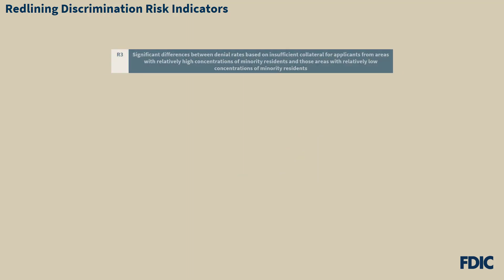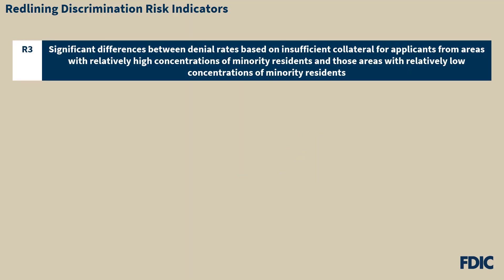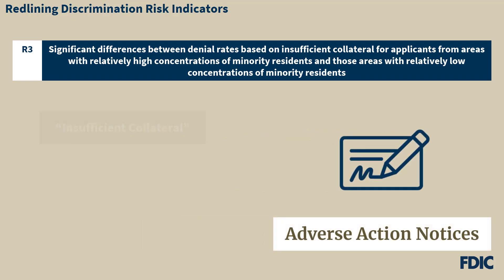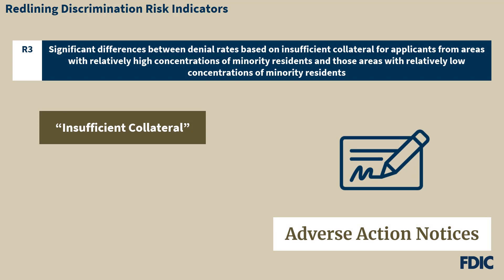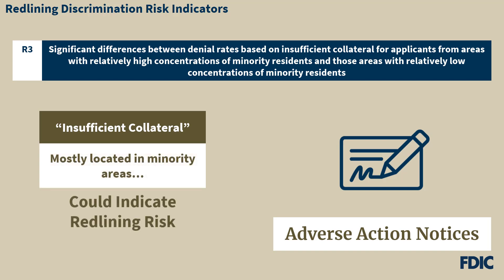Risk indicator R3 references significant differences between denial rates based on insufficient collateral for applicants from areas with relatively high concentrations of minority residents and those areas with relatively low concentrations of minority residents. For example, examiners may review adverse action notices to see if any provide insufficient collateral as a reason for denial, and can then determine where the collateral properties are located. R3 risk could be present if the properties deemed to be insufficient collateral were disproportionately located in minority areas.